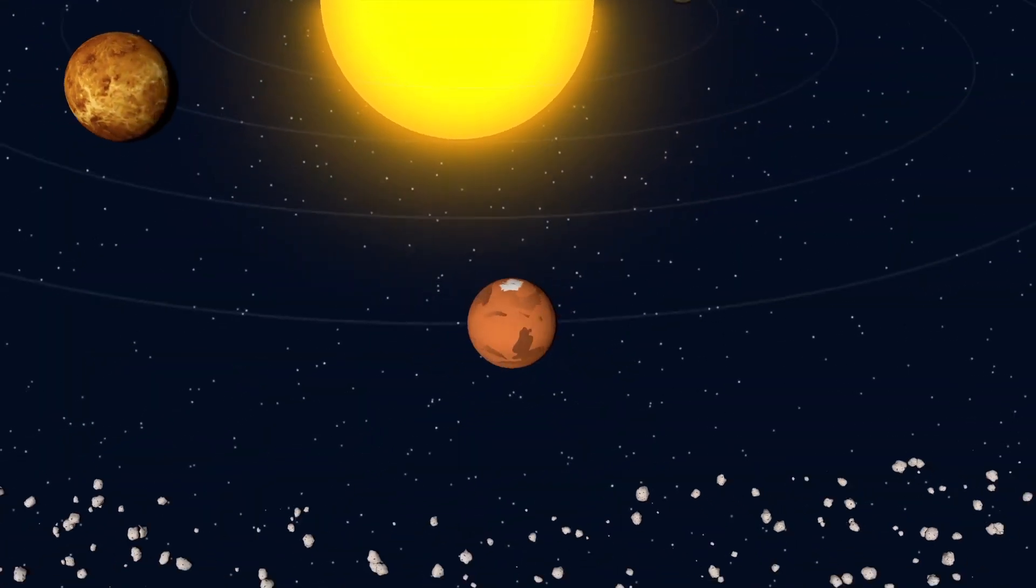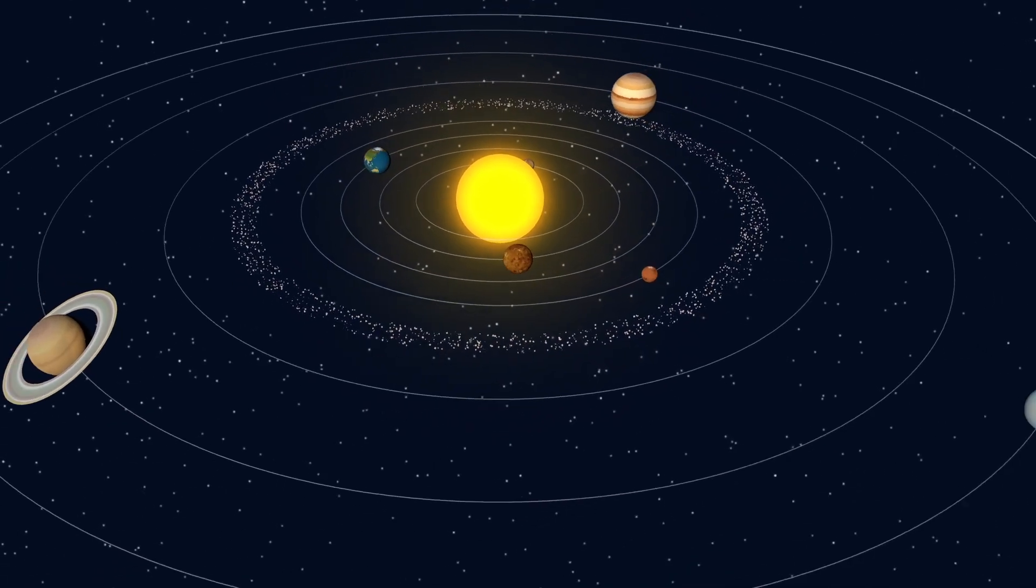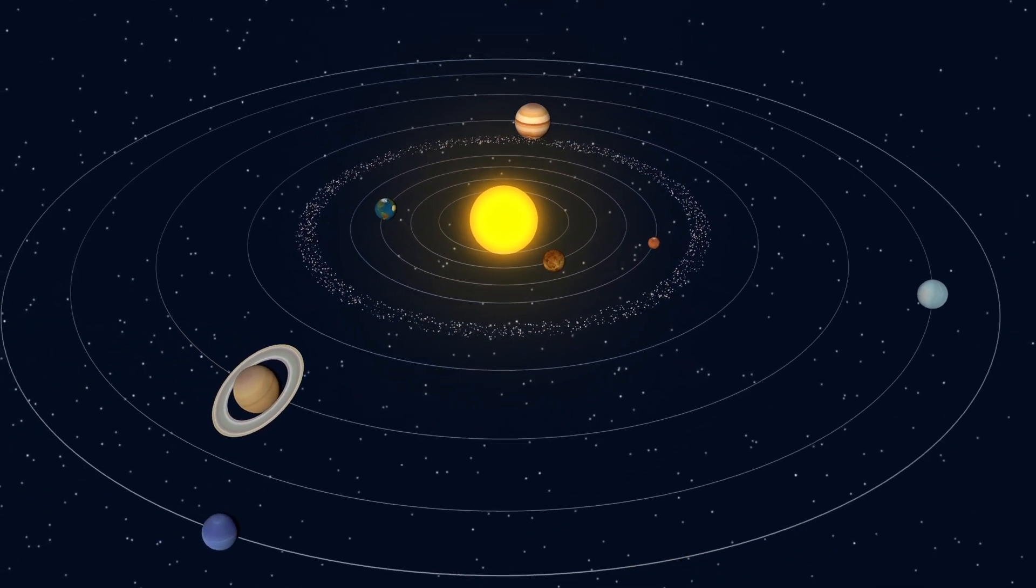Mars is a close neighbour of the Earth, considering how big the solar system is. It orbits the Sun, just like the Earth and the other planets.